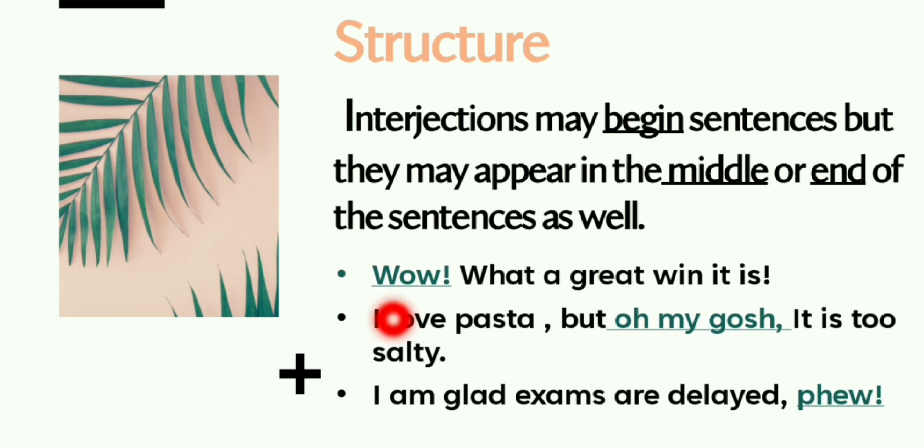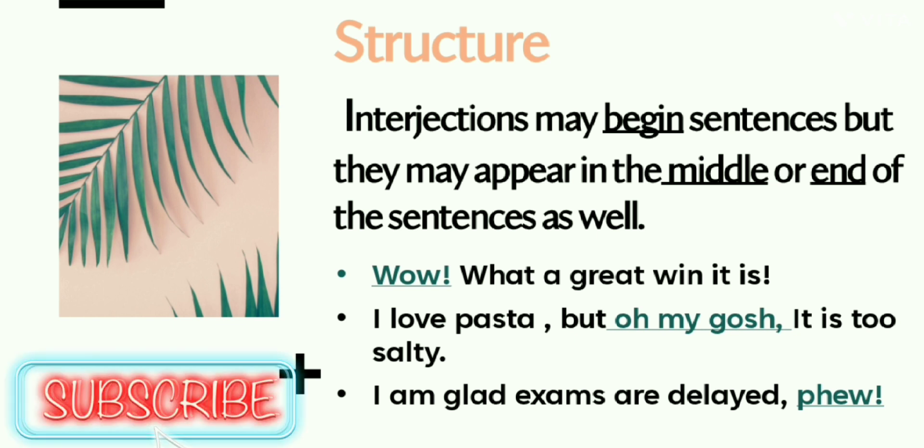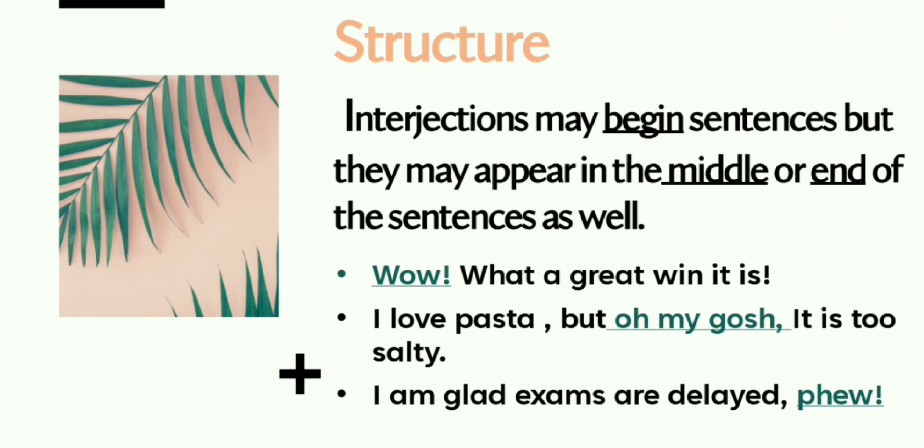Sentence number one: Wow! What a great win it is. Over here, wow interjection is beginning the sentence. Example number two: I love pasta, but oh my gosh, it's too salty. Over here, oh my gosh is an interjection which comes in the middle of the sentence. Last example: I am glad exams are delayed, phew. This interjection is at the end of the sentence. So interjections can come in any place in the sentence.